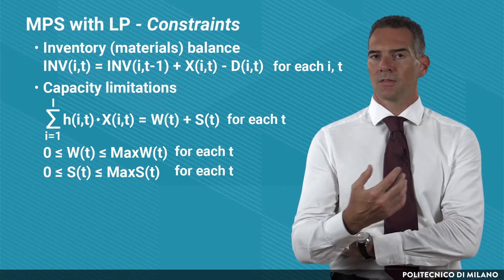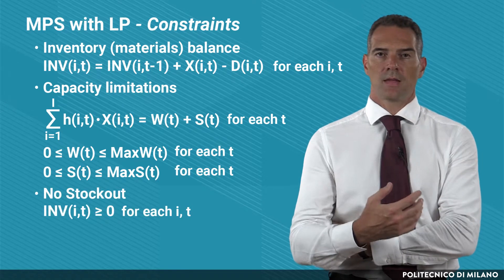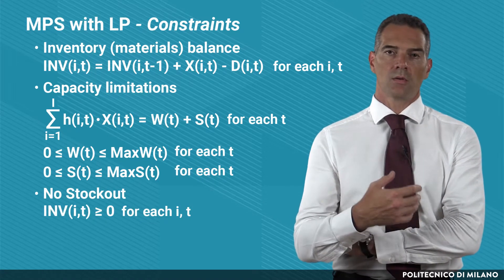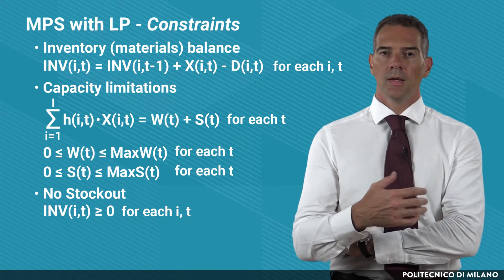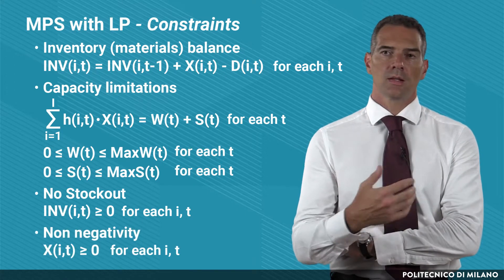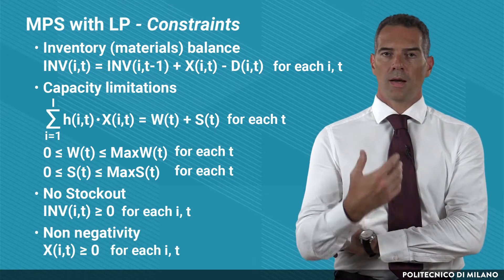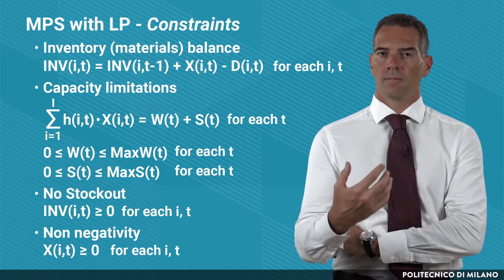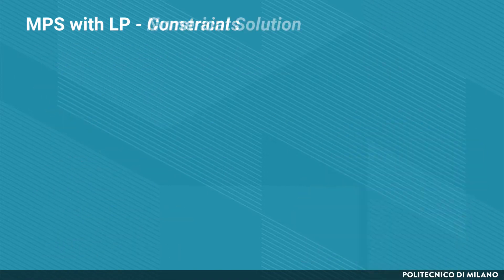Eventually, we have the last constraints: inventories always have to be greater than zero, so that we are sure we have no stock-out, and as usual, non-negativity constraints, so as to avoid that negative values are set for the production plan.